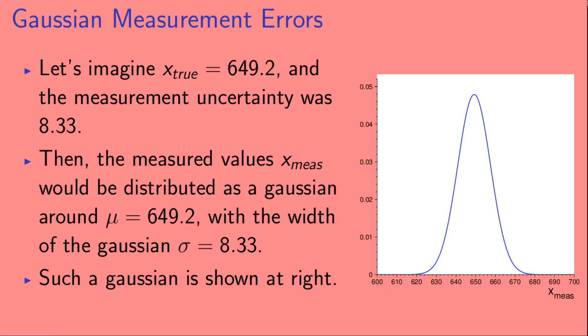Let's imagine that x_true equals 649.2, and the measurement uncertainty was 8.33. Then, the measured values, x_meas, would be distributed as a Gaussian around mu equals 649.2, with the width of the Gaussian, sigma, equal to 8.33. And such a Gaussian is shown at the right.